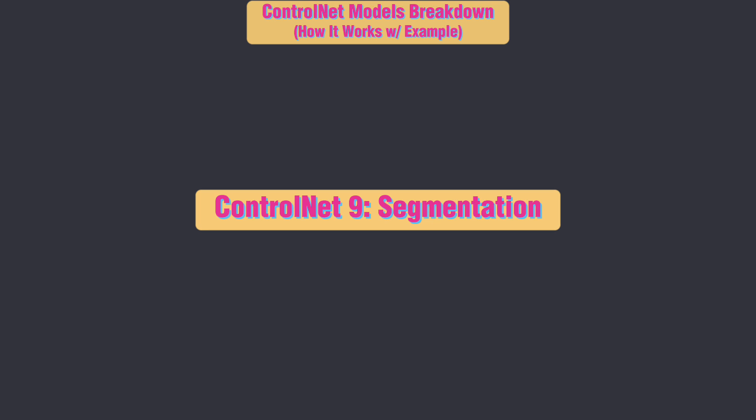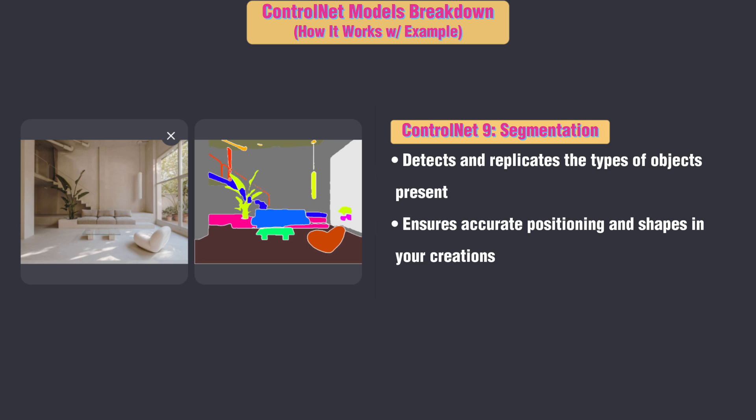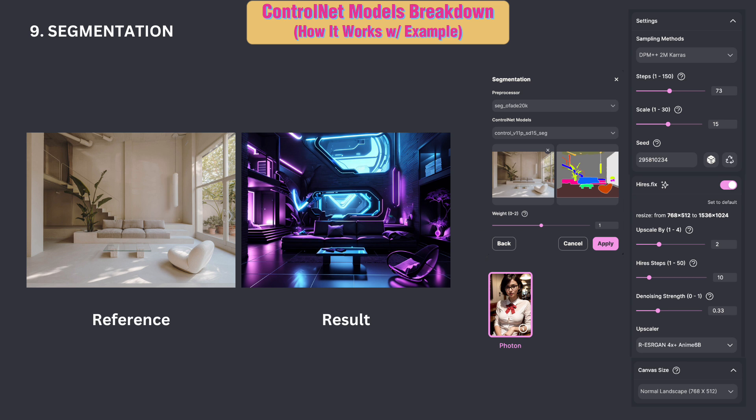ControlNet 9: Segmentation. It detects and replicates the types of objects present in your reference image, ensuring accurate positioning and shapes in your creations. Here's an example of transforming a modern living room into a cyberpunk version while keeping the same object shapes and positioning.